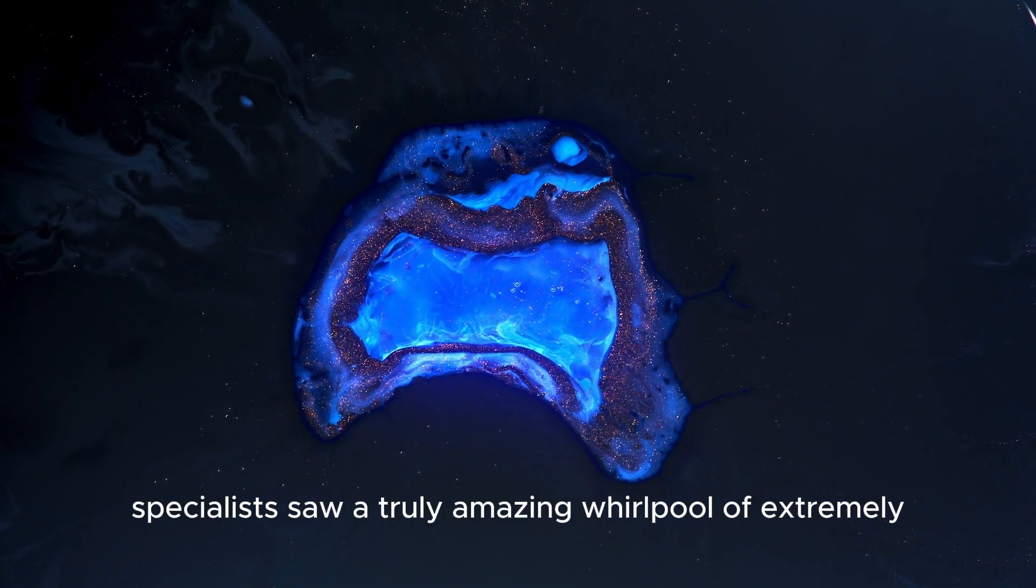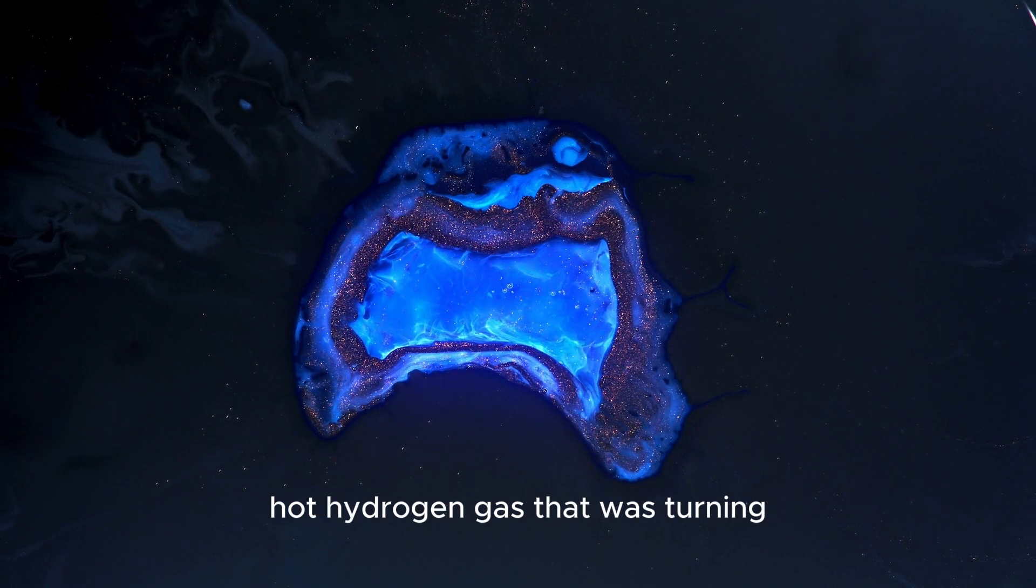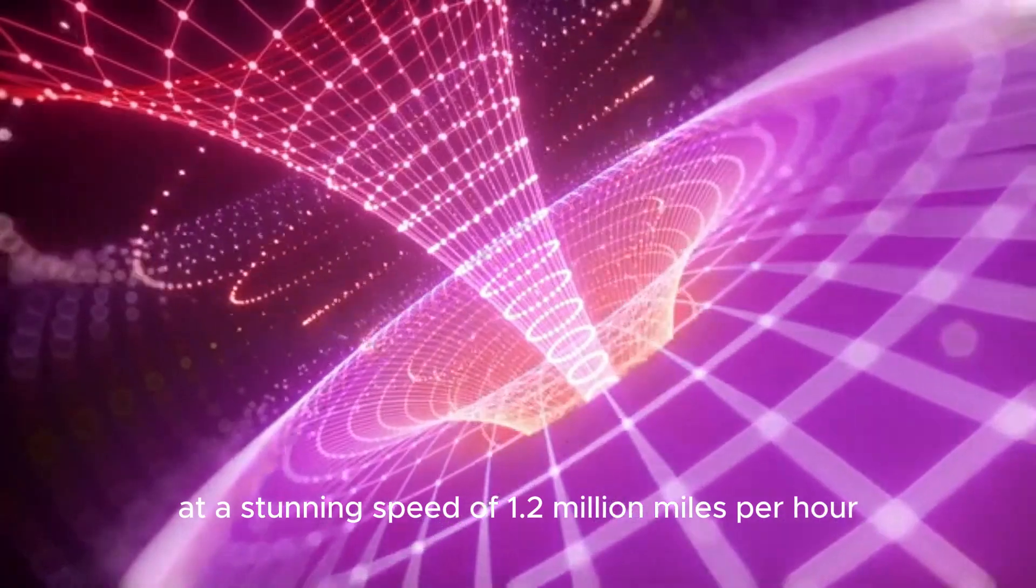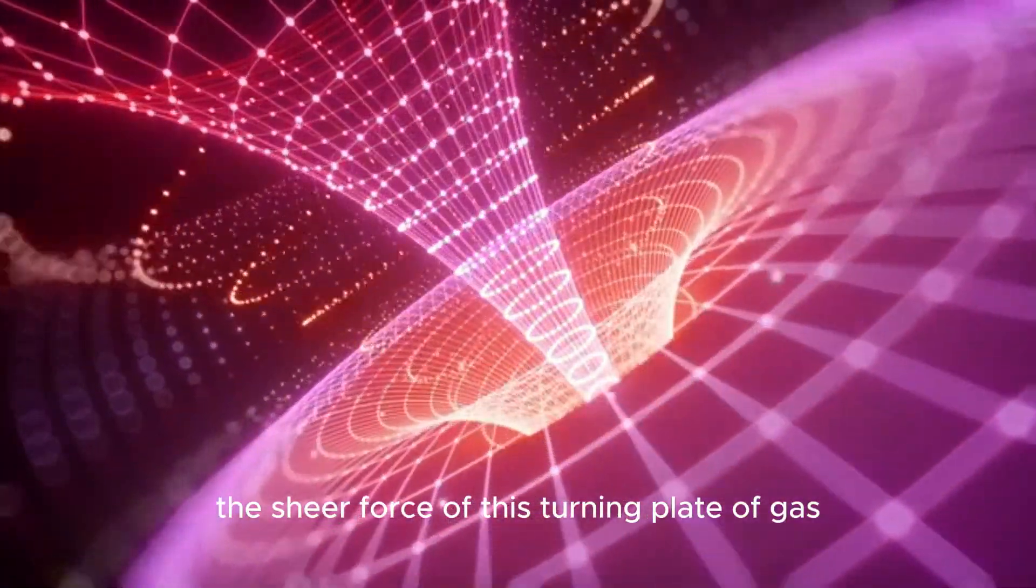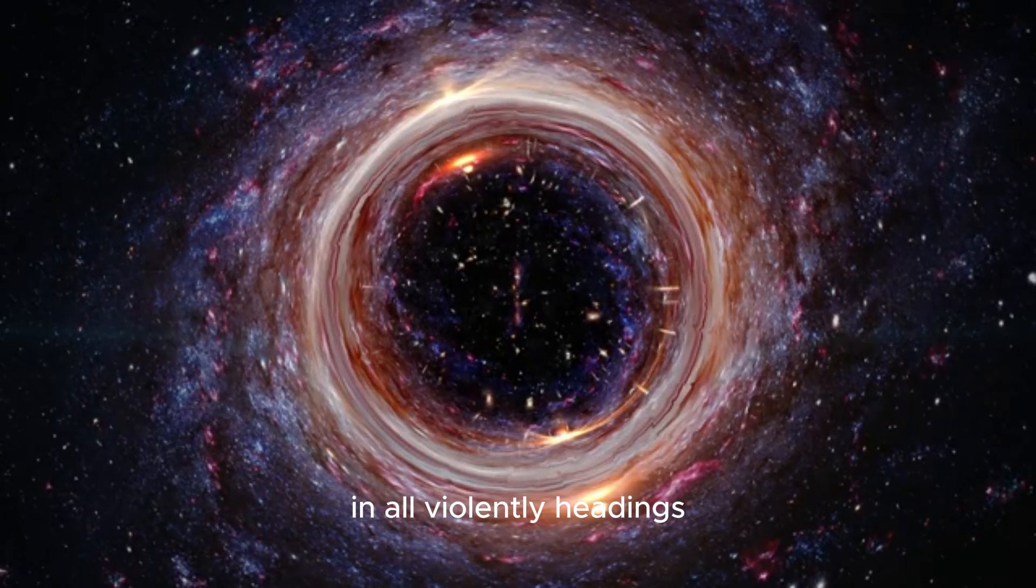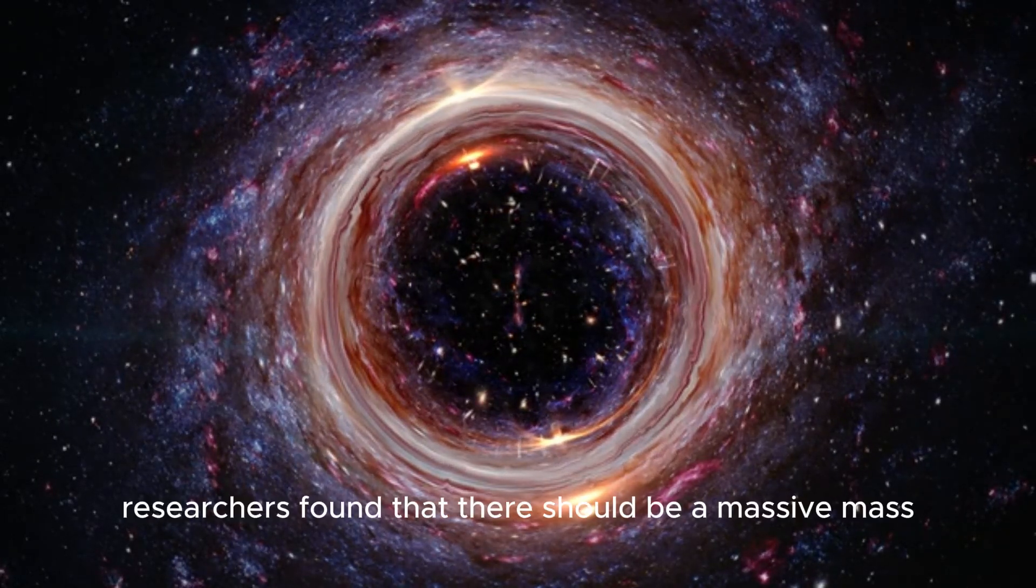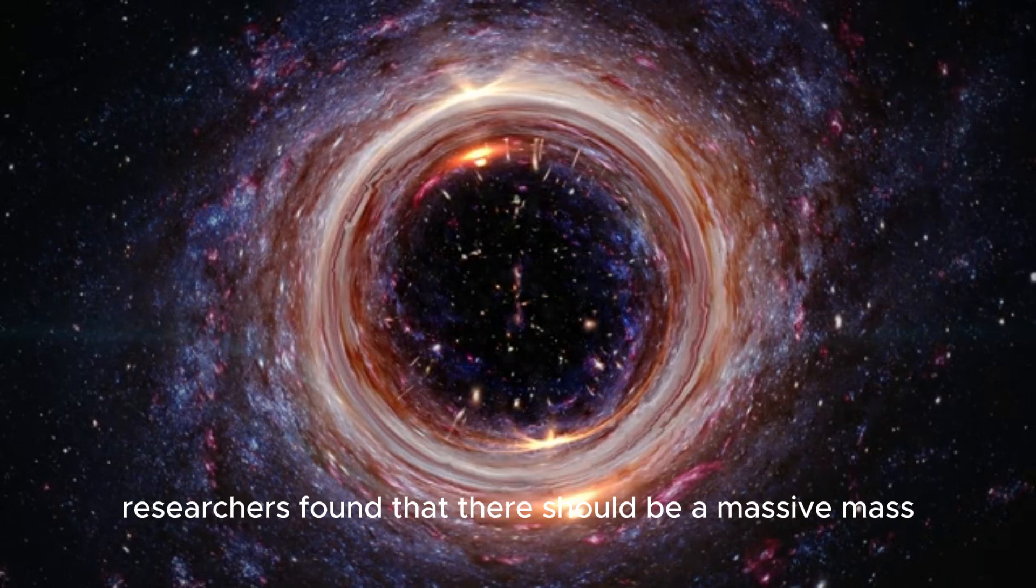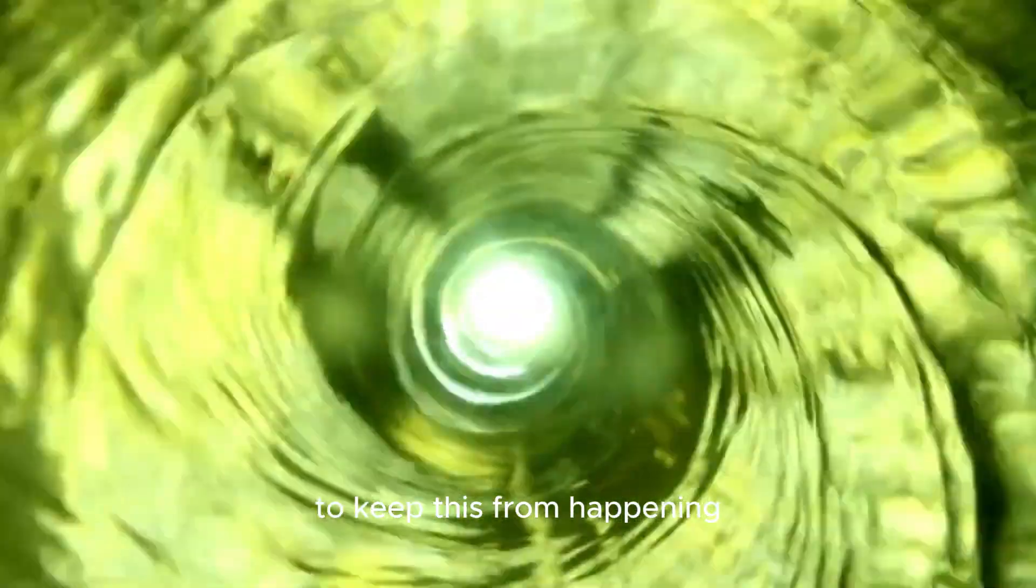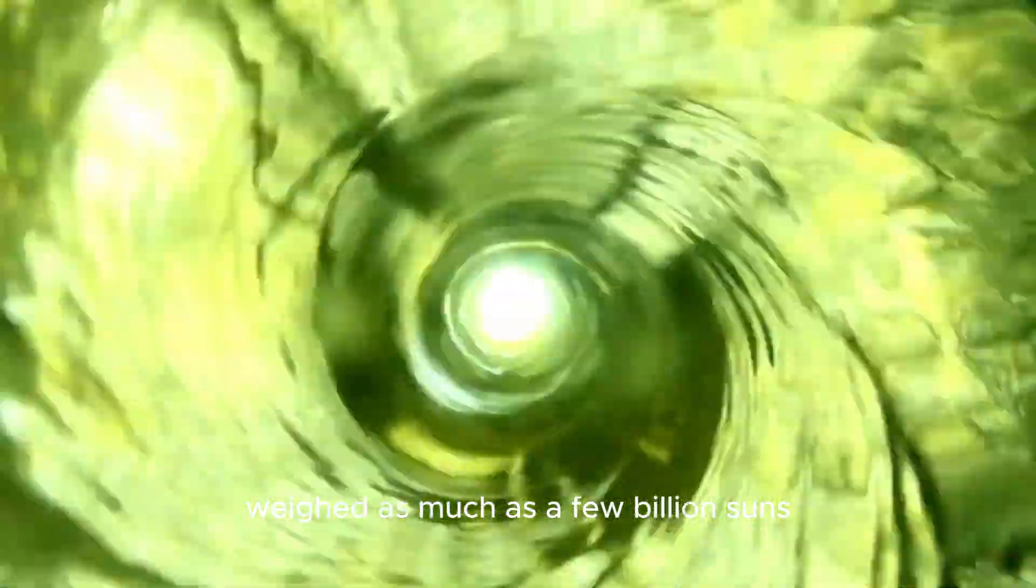Specialists saw a truly amazing whirlpool of extremely hot hydrogen gas that was turning at a stunning speed of 1.2 million miles per hour. The sheer force of this turning plate of gas should have made it fly apart in all violently headings. Yet it didn't. Researchers found that there should be a massive mass gathered at the central place of the world to keep this from happening. This immense article weighed as much as a few billion suns and should be a dark opening.